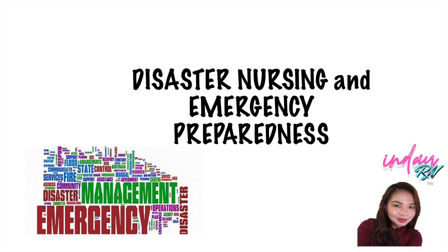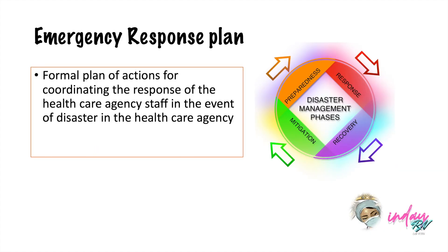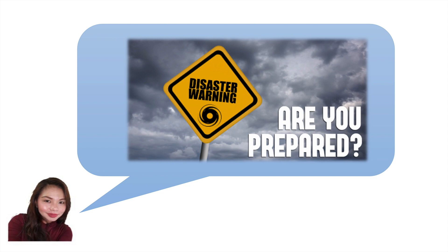Usually in a healthcare agency setting, if a disaster occurs, the agency disaster preparedness plan or emergency response is activated immediately, and the nurse responds by following the directions identified in the plan. In the community setting, if a nurse is the first responder to a disaster, the nurse cares for the victim by attending to life-threatening problems first. When rescue workers arrive at the scene, an immediate plan for triage should begin.